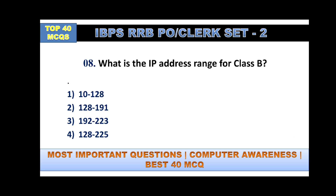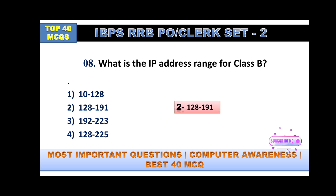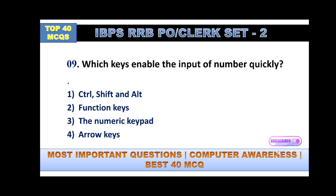What is the IP address range for Class B? In computer networking there are five classes: A, B, C, D, and E. Class A starts from 0 to 127, Class B from 128 to 191, Class C 192 to 223, Class D 224 to 239, and Class E 240 to 255. So option B, 128 to 191, is the answer.